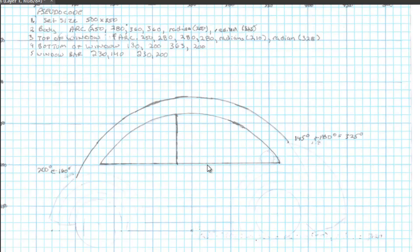Then I had to put in lines, which are pretty simple. We have the bottom of the window — this spot is 130, 200, and this XY coordinate is 365, 200. Then I have the window bar here, which starts at 230, 140, and ends at 230, 200. You can see it moves along pretty fast once you realize how to use the protractor to figure it out.